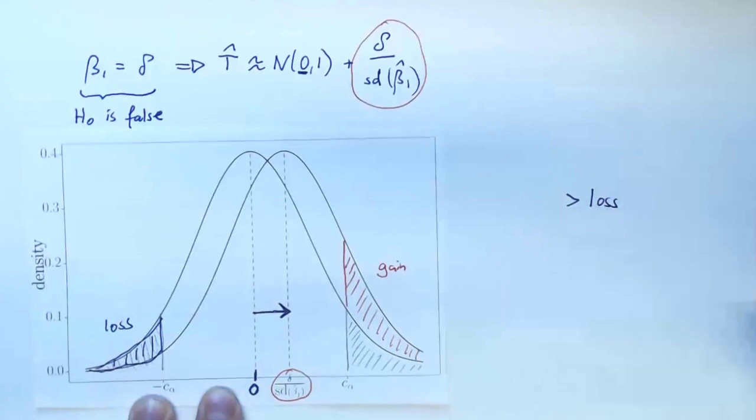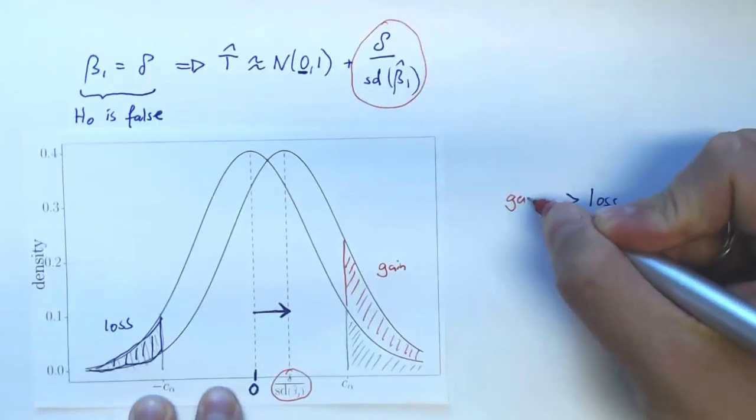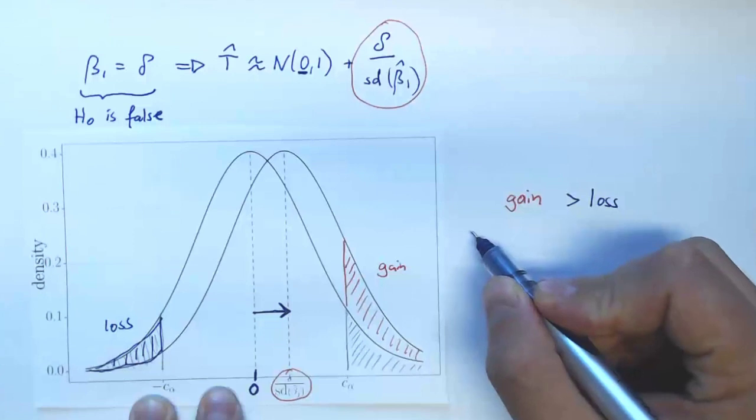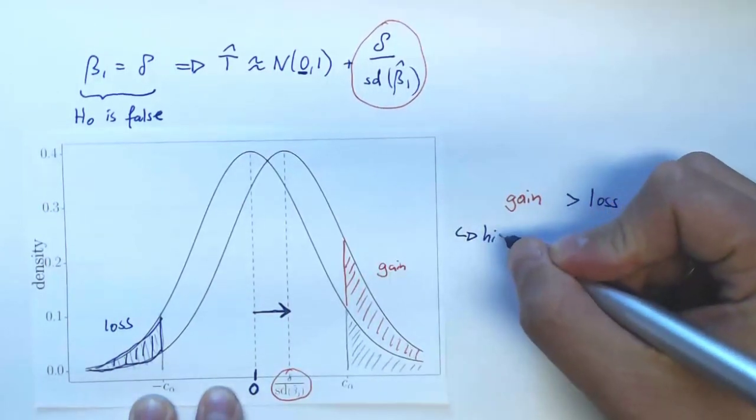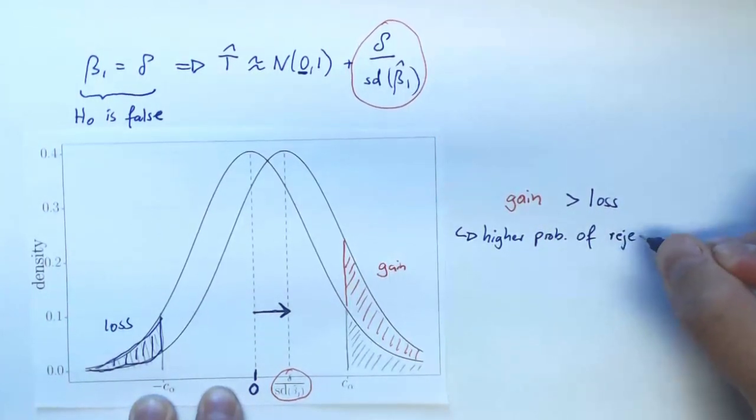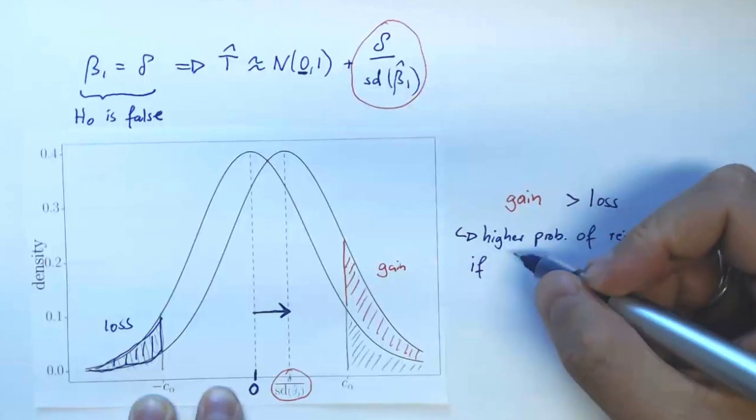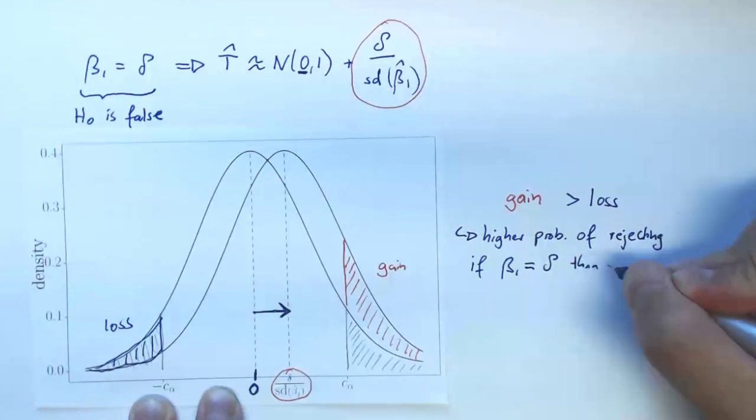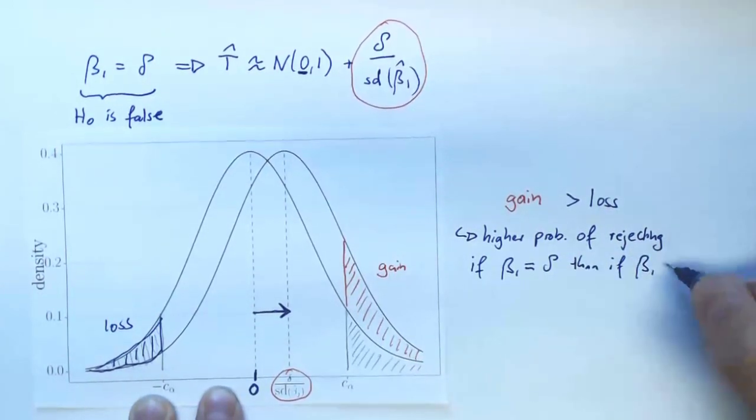So now it's fairly easy to see, just by visual inspection, that this loss is smaller than the gain. That means that overall, now there's a larger probability of rejecting than alpha. So higher probability of rejecting if we have some positive distance from the null, than if the null is true.